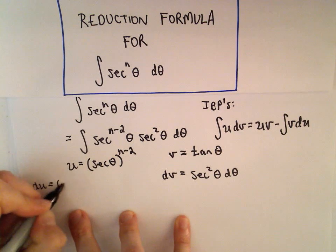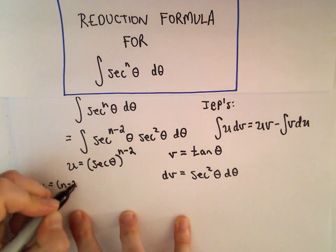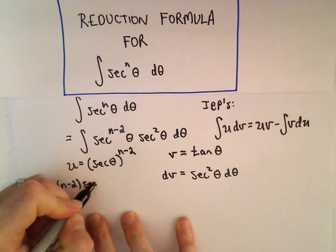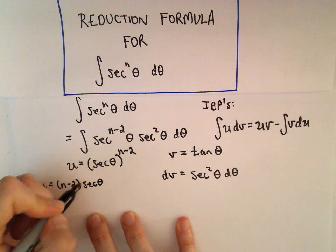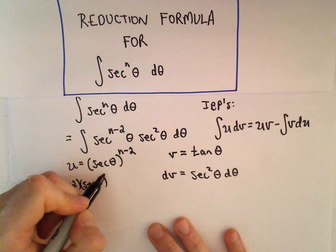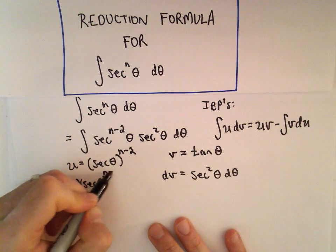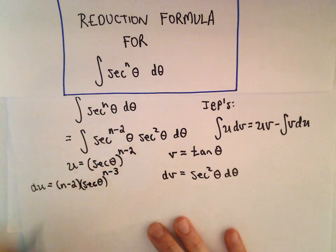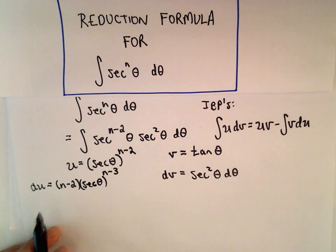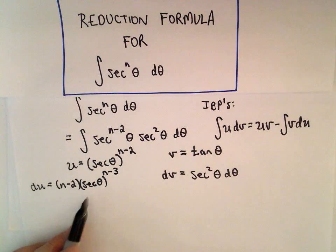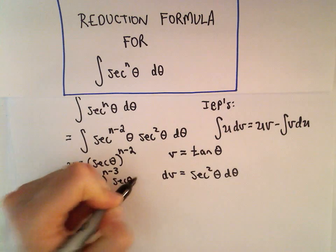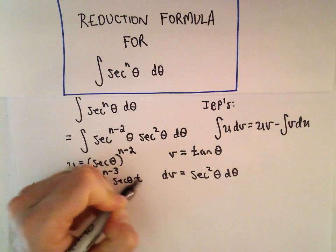So our (n-2) comes out front. We leave the inside alone and take 1 away from the exponent, giving us (n-3). Then we take the derivative of the inside, so the derivative of sec(θ) gives us sec(θ)·tan(θ).